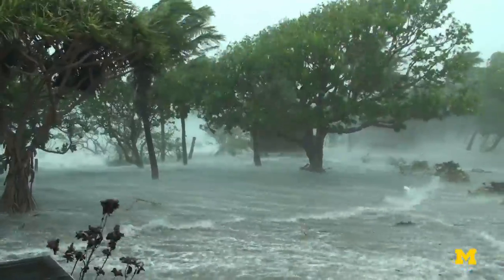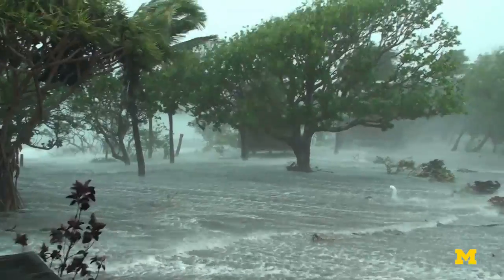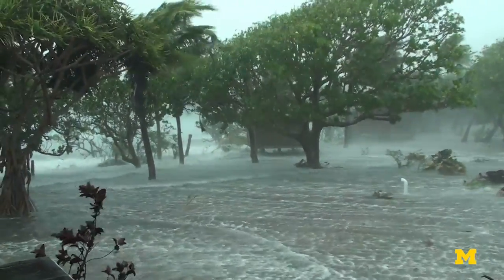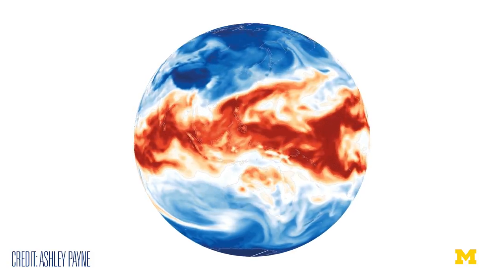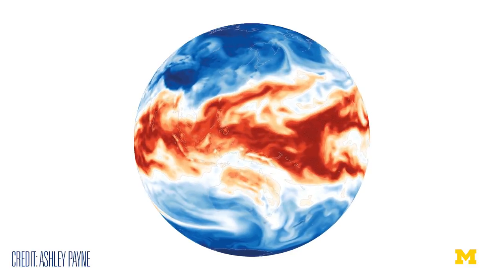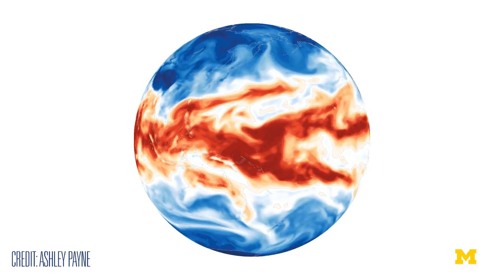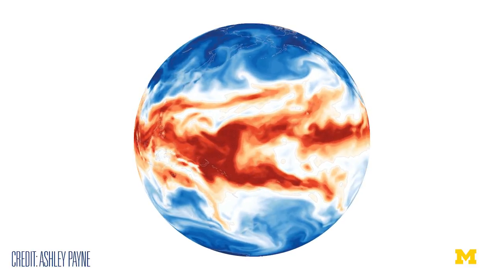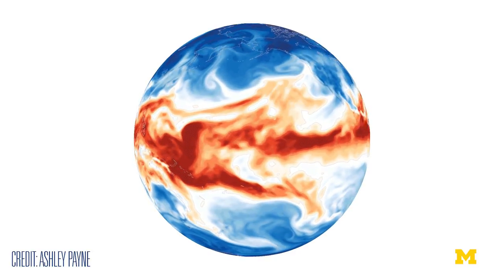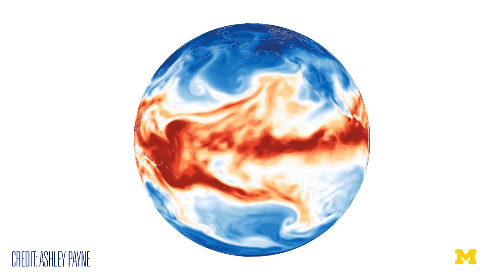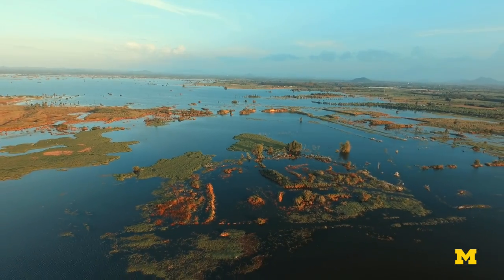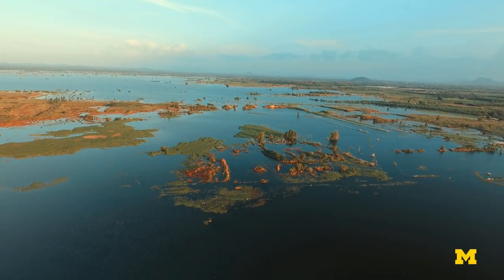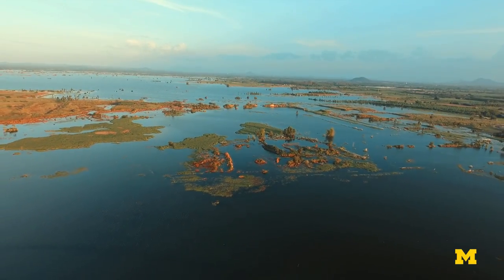Extreme weather events such as severe flooding and high winds are now found to be associated with atmospheric rivers. Post-doctoral fellow Ashley Payne has developed a series of animations that have enabled her to understand what creates an intense atmospheric river before its impact, with the goal of better representing them in climate models so that water resource managers can be better prepared for these events.